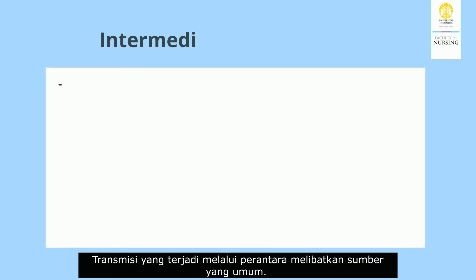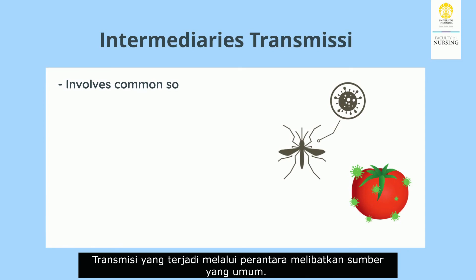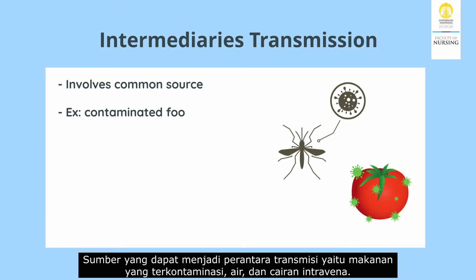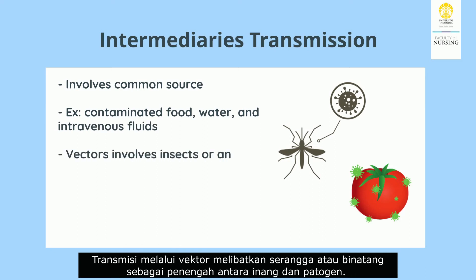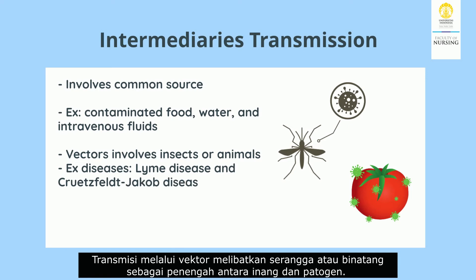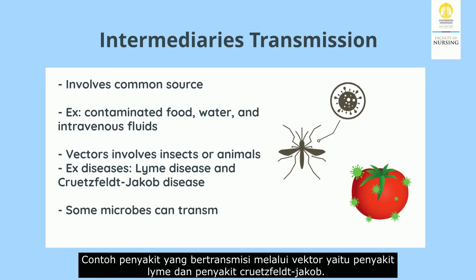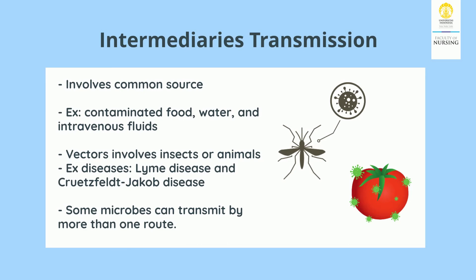Transmission through intermediate routes involves a common source. Sources that can mediate transmission include contaminated food, water, and intravenous fluids. Vector transmission involves insects or animals as intermediaries between the host and the pathogen. Examples of diseases transmitted through vectors include Lyme disease and Creutzfeldt-Jakob disease. Some microbes can transmit by more than one route.